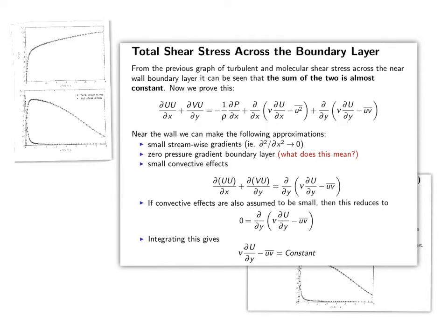We're going to start making assumptions so that we can simplify this. We're saying that this is a zero pressure gradient boundary layer. This means that our pressure gradient term goes to zero and effectively the boundary layer is neither growing or shrinking.